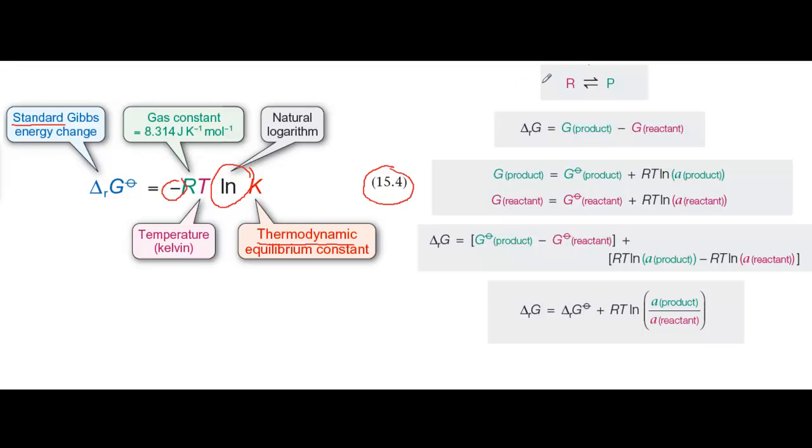First, we imagine the simplest possible reaction in which one mole of reactant produces one mole of product. For this reaction, delta G is equal to the Gibbs energy of the product minus the Gibbs energy of the reactant. G product minus G reactant.